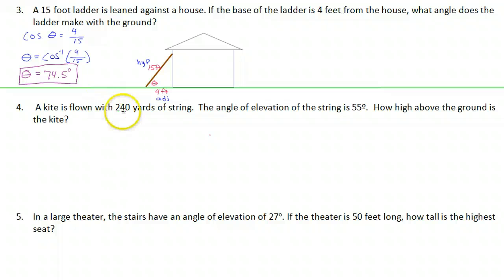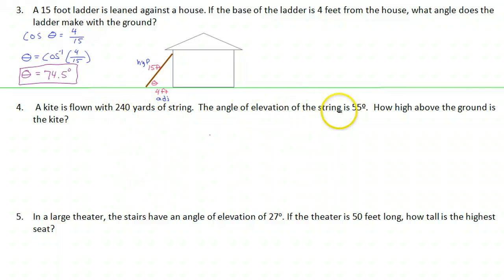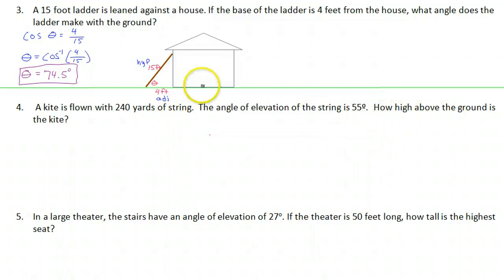Number four: a kite is flown with 240 yards of string. The angle of elevation of the string is 55 degrees. How high above the ground is the kite?